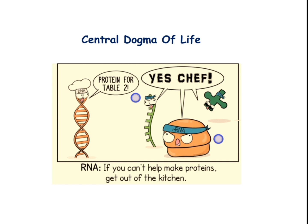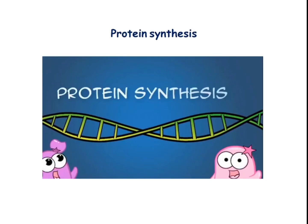First we should know what a protein is, because we will learn about protein synthesis. Protein is nothing but a polypeptide chain. A polypeptide chain means small amino acids are getting attached with peptide bonds, that is why protein is called a polypeptide chain. How these amino acids come and get attached with the peptide bond is what we will learn in the translation process — from RNA to protein synthesis.